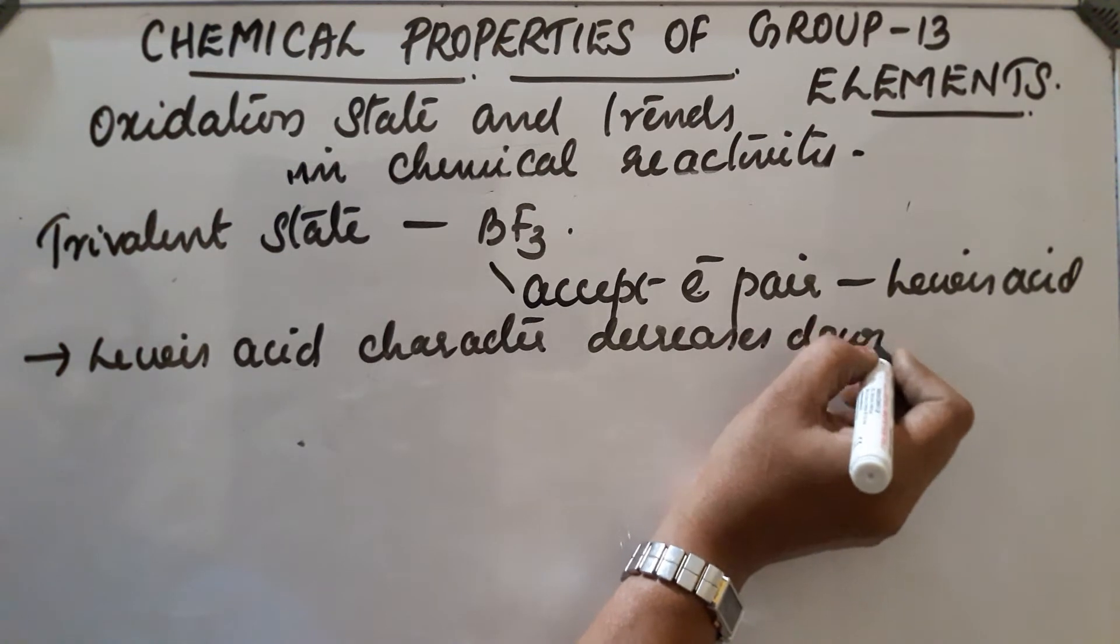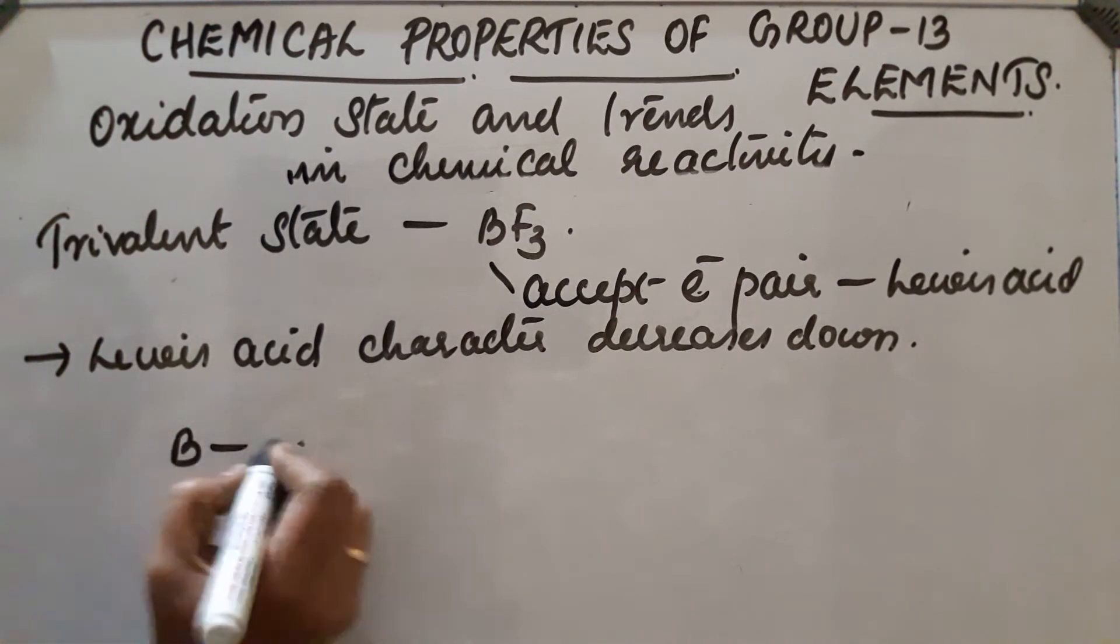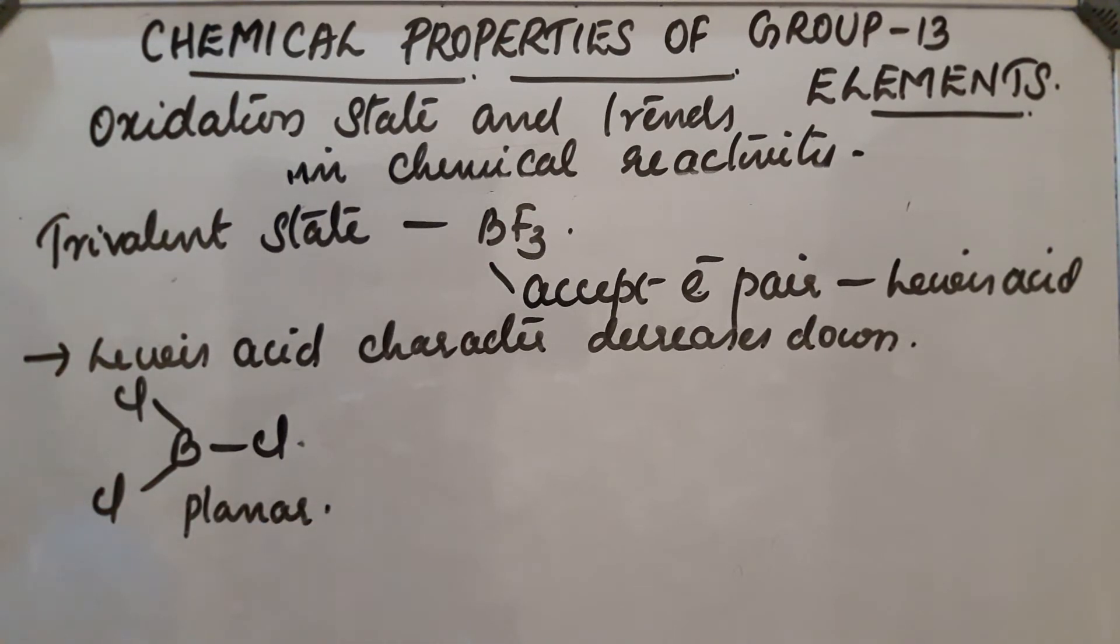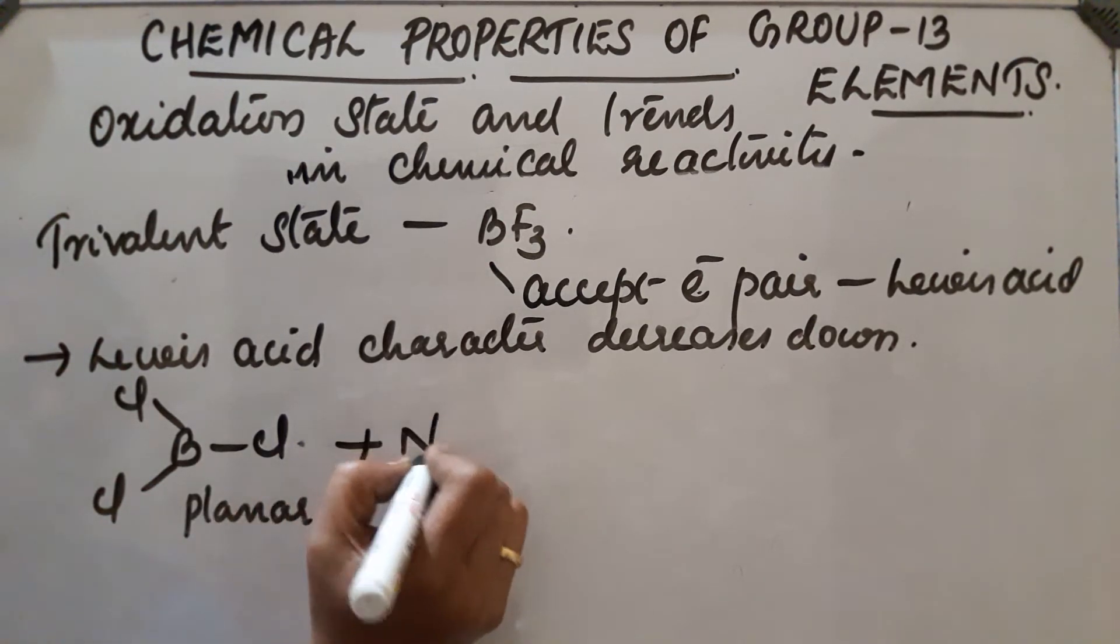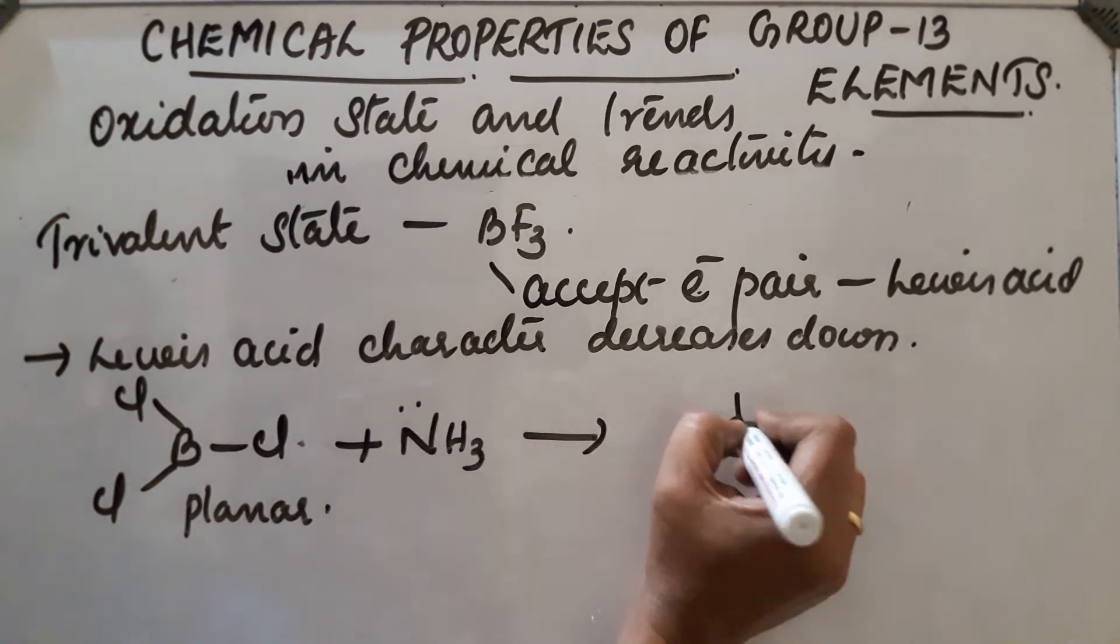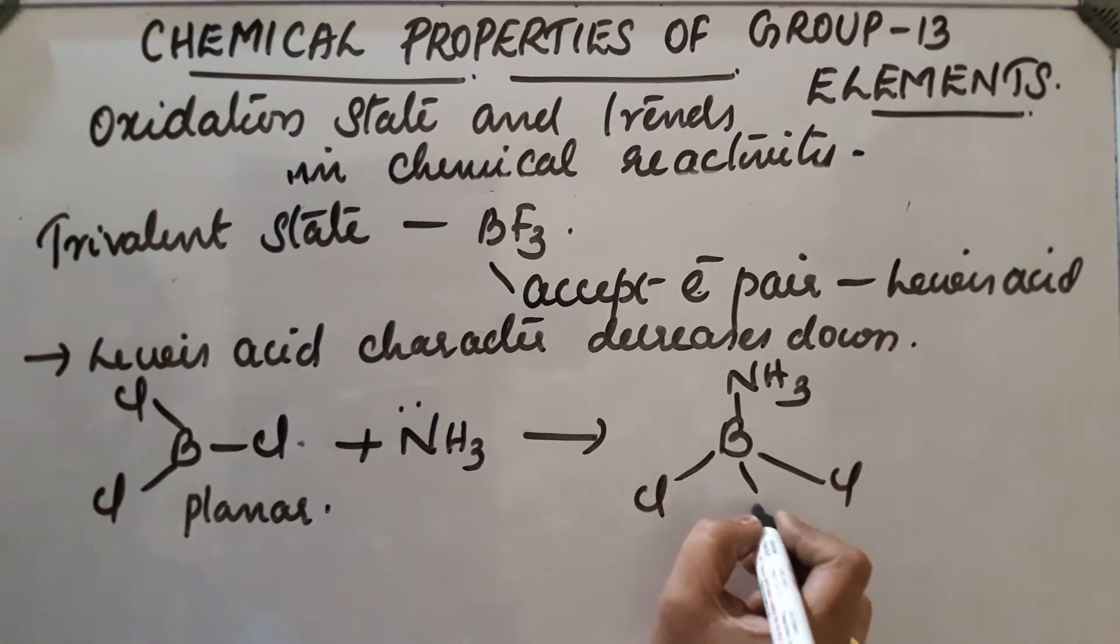For example, BCl₃ - when BCl₃ reacts with ammonia it forms a tetrahedral complex by accepting the lone pair present in ammonia. BCl₃ is planar in structure, a planar compound. With ammonia, which contains a lone pair, it accepts that lone pair and forms a tetrahedral complex.